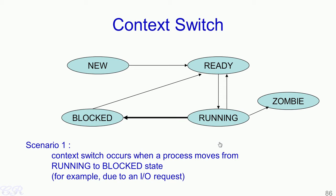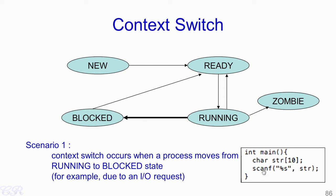Let us consider the first scenario of how a context switch gets triggered. Consider a program which invokes scanf, requiring a user to input something through the keyboard. This function is executing as a process currently in the running state, meaning it holds the CPU. When scanf is invoked, the process needs to be blocked until the user inputs data. So the state changes from running to blocked, and the operating system triggers a context switch so that another process can execute.